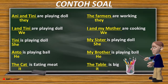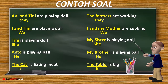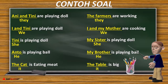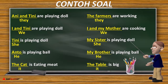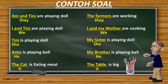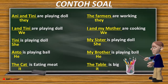Lalu, contoh ketiga adalah kata ganti She untuk menggantikan nama wanita tunggal. Contoh: 'Teenie is playing doll.' Dikarenakan Teenie adalah seorang wanita dan dia hanya sendiri, maka kata gantinya adalah She. Lalu bisa juga nama-nama keluarga yang berkaitan dengan gender wanita, yaitu my sister, my mother, my aunt, atau my niece. Intinya adalah nama keluarga yang berjenis kelamin wanita dan itu tunggal, hanya satu. Maka kata gantinya adalah She.